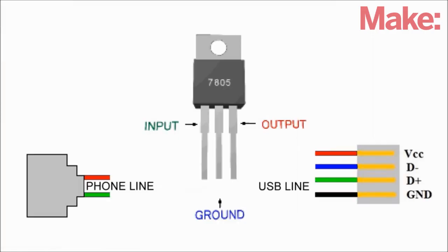Connect the red wire from the phone line to the first lead of the regulator, then connect the green wire from the phone line to the second lead. Then take the black lead from the USB cable and also connect that to the second lead of the regulator, and connect the red wire from the USB cable to the third lead.